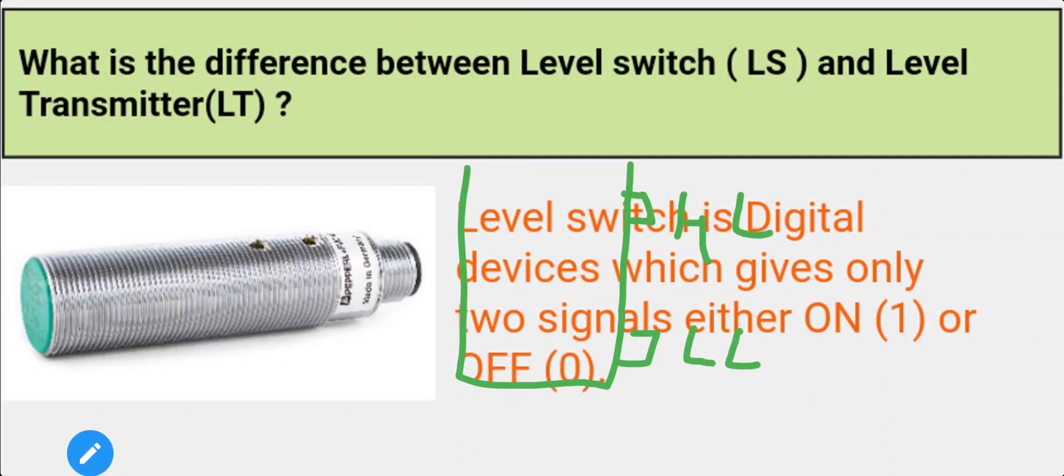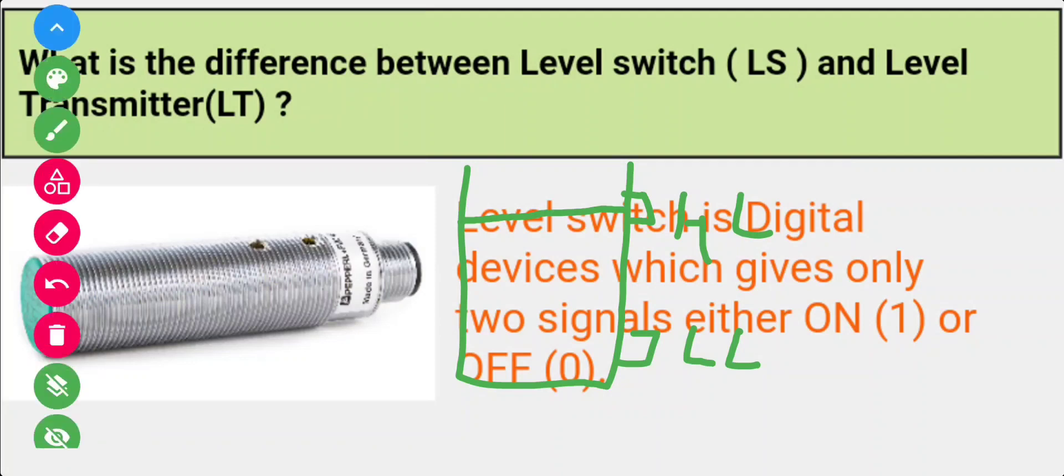So whenever the level goes high, the high level limit switch will give output as a one. Whenever level goes low.